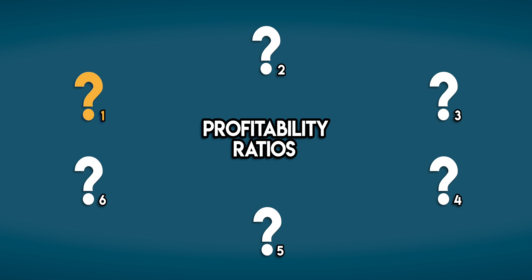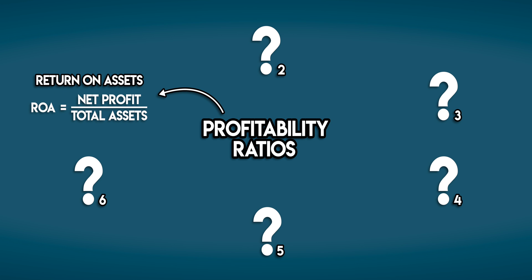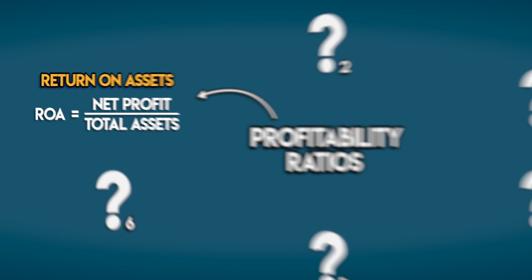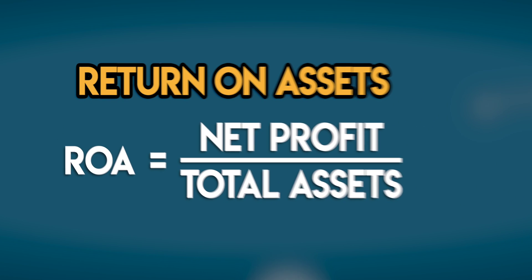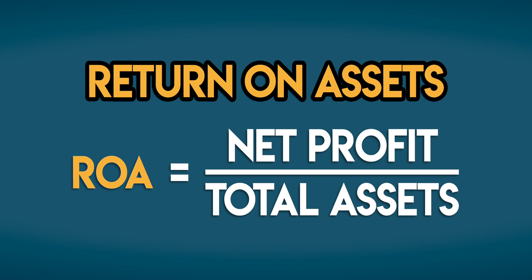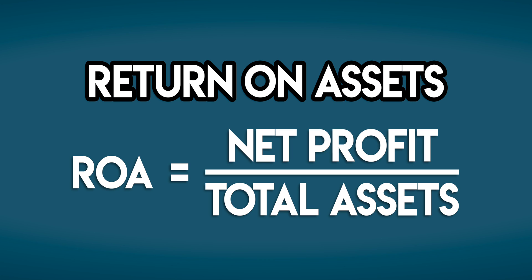The first profitability ratio you should know is return on assets. Return on assets, or ROA, is equal to a business's net profit divided by its total assets. To calculate it we need two financial statements: the income statement and the balance sheet.